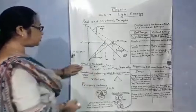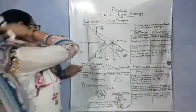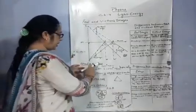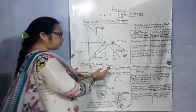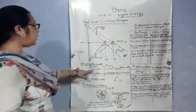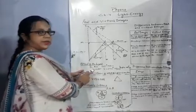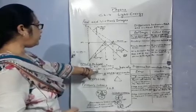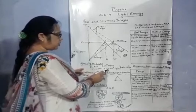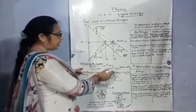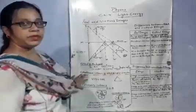Now the speed of light. Light travels in a straight line. The speed of light in air is 3 × 10⁸ meters per second, which is the maximum speed of light. When light passes through transparent objects like water and glass, its speed decreases. In water, the speed of light is 2.25 × 10⁸ meters per second, and in glass, the speed of light is 2 × 10⁸ meters per second.